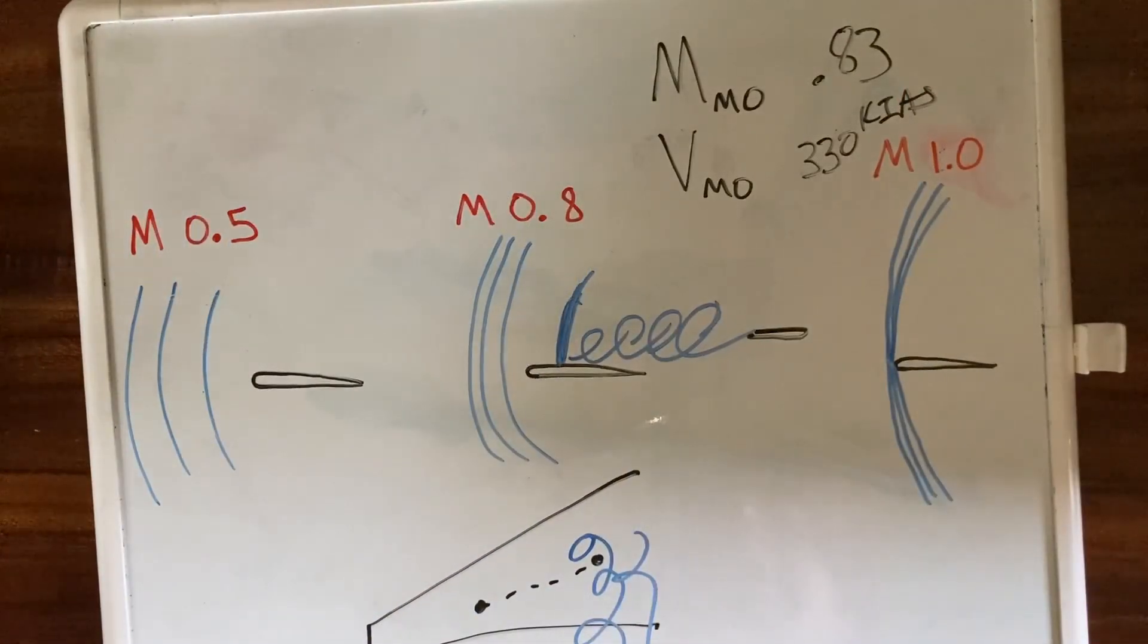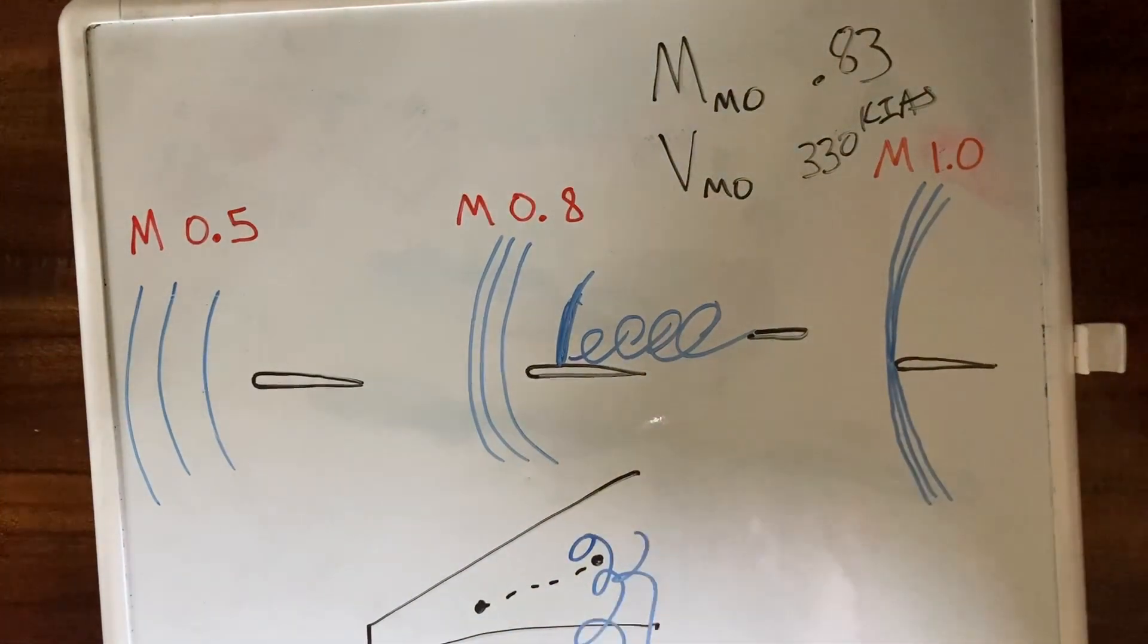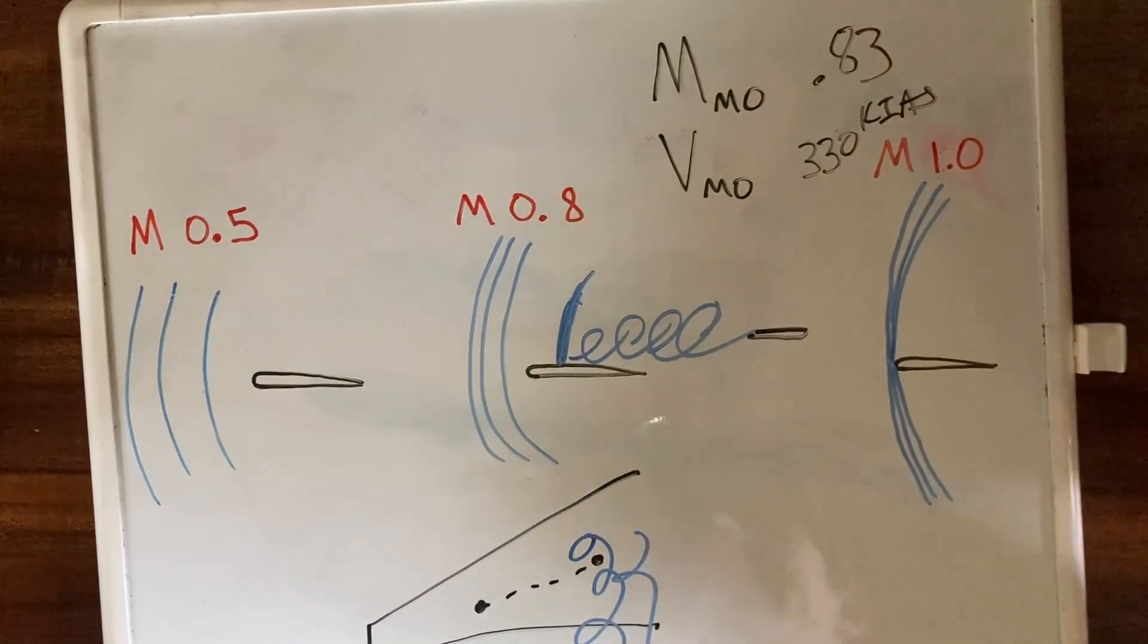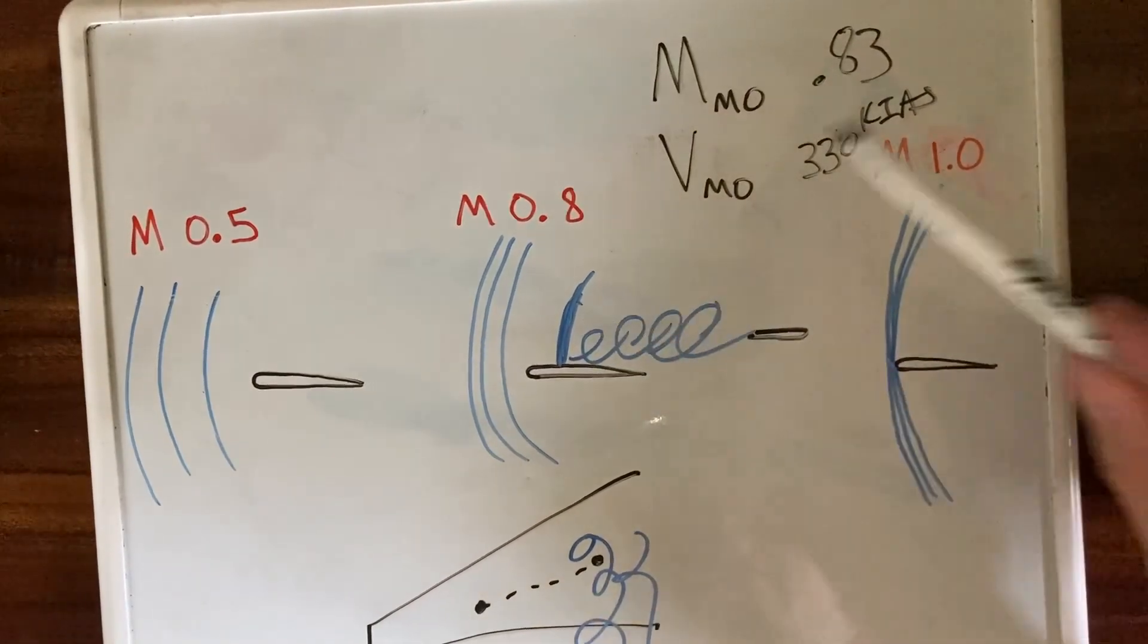Aircraft that can fly at these speeds have a couple speed limits associated with them. We've got MMO and VMO. These are just made up numbers here for a sample airplane, but they're typical. MMO is a limiting Mach number, and the purpose of that is to keep the aircraft from getting the shock wave forming on the wing and experiencing the negative effects that are associated with that.